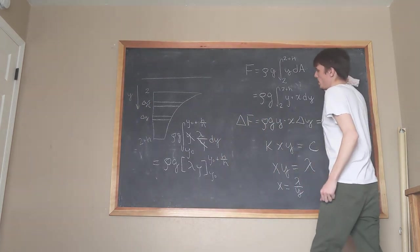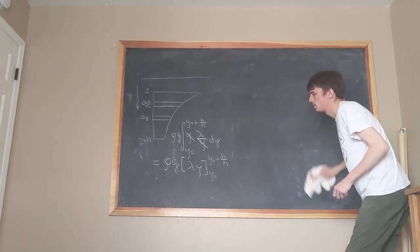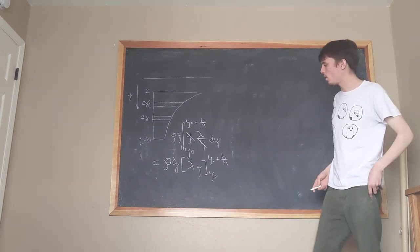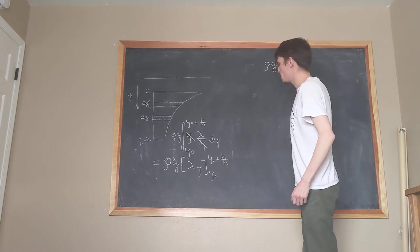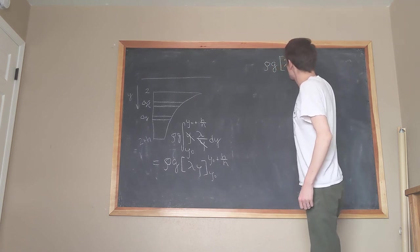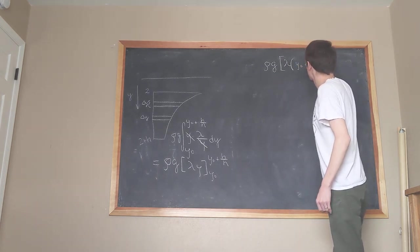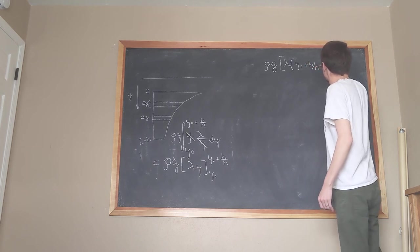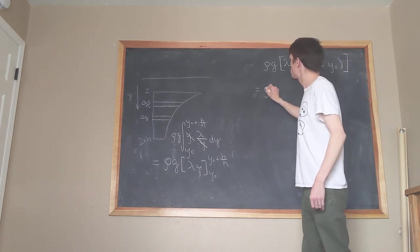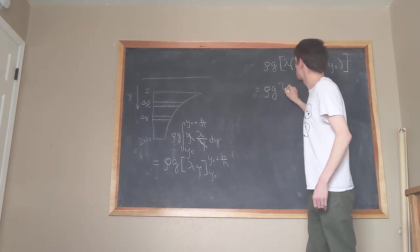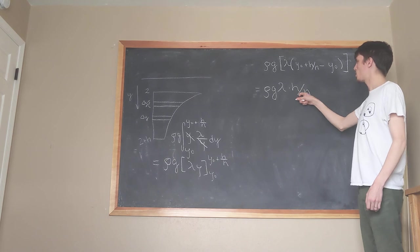Okay, go ahead and erase some of this since we haven't looked at it. Okay, so let's go ahead and evaluate this. Pretty easy to do. You're going to get ρ times g times λ, and then you're going to get y₀ plus h over n minus y₀, which is equal to ρ times g times λ times h over n. ρgλh all over n.